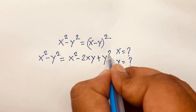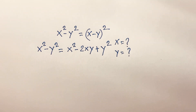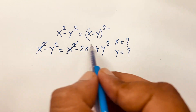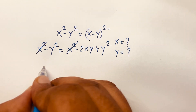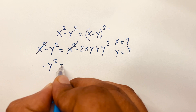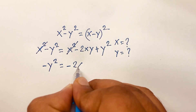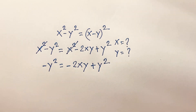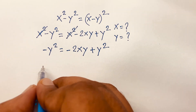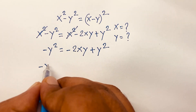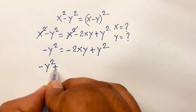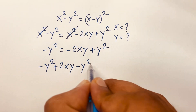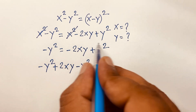Here the x squared on the left cancels with the x squared on the right. So we get minus y squared is equal to minus 2xy plus y squared. Rearranging, we move terms: minus y squared plus 2xy minus y squared equals 0.